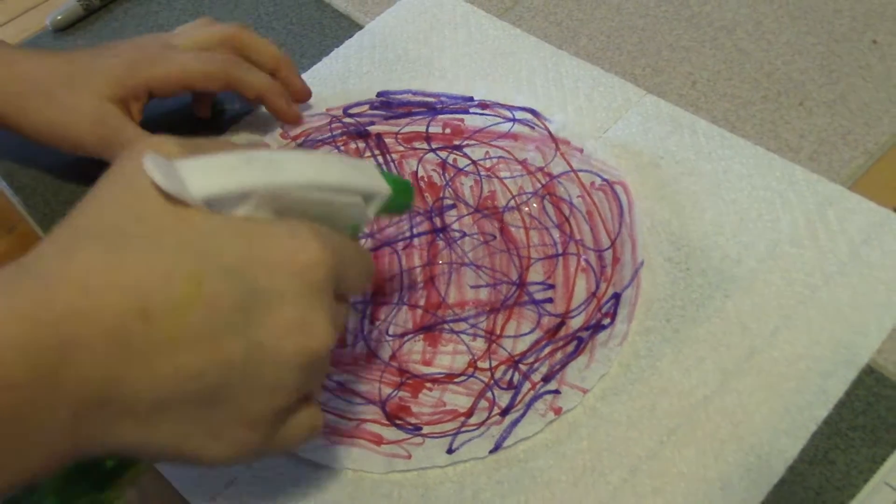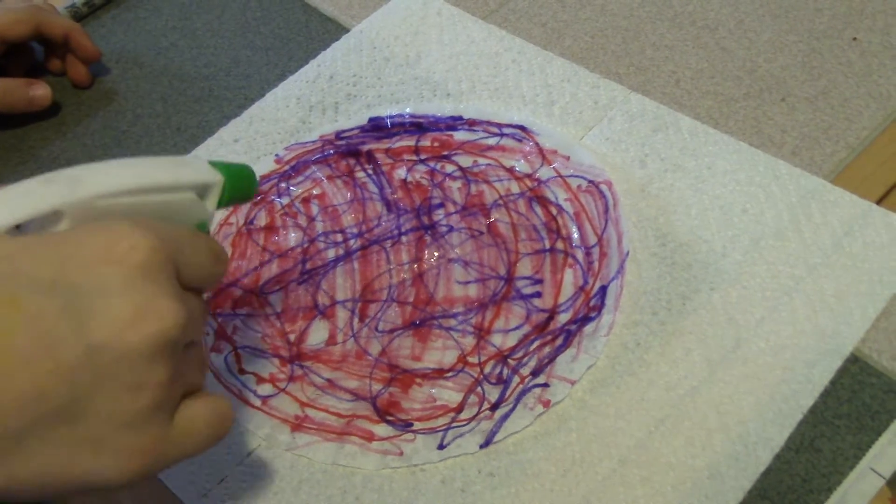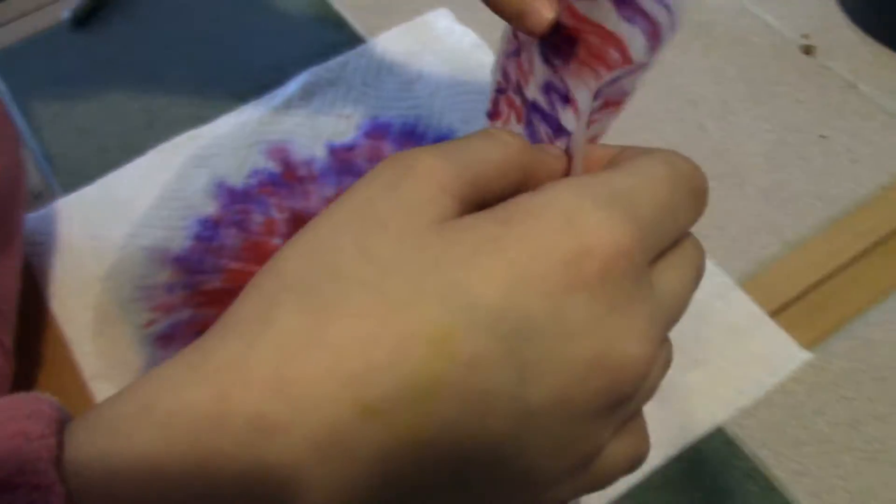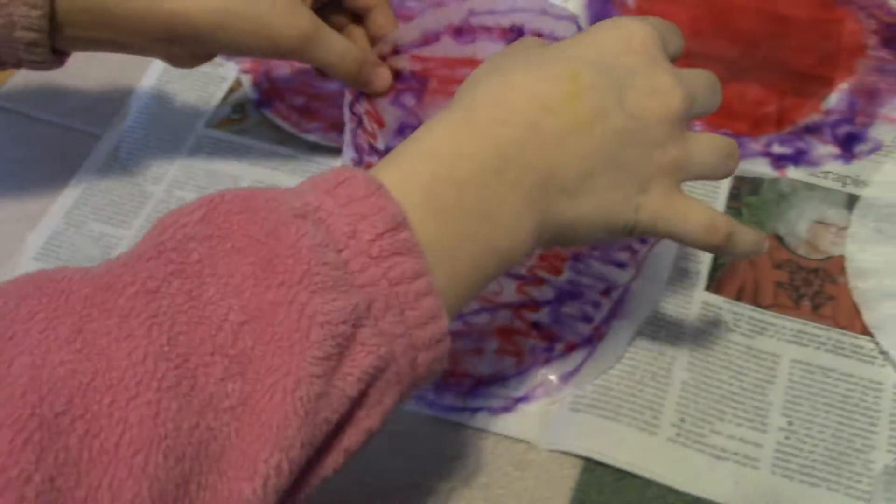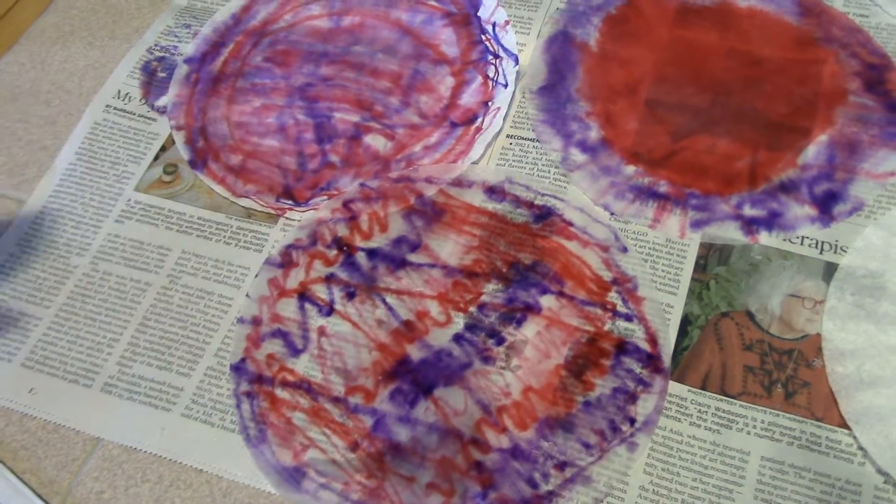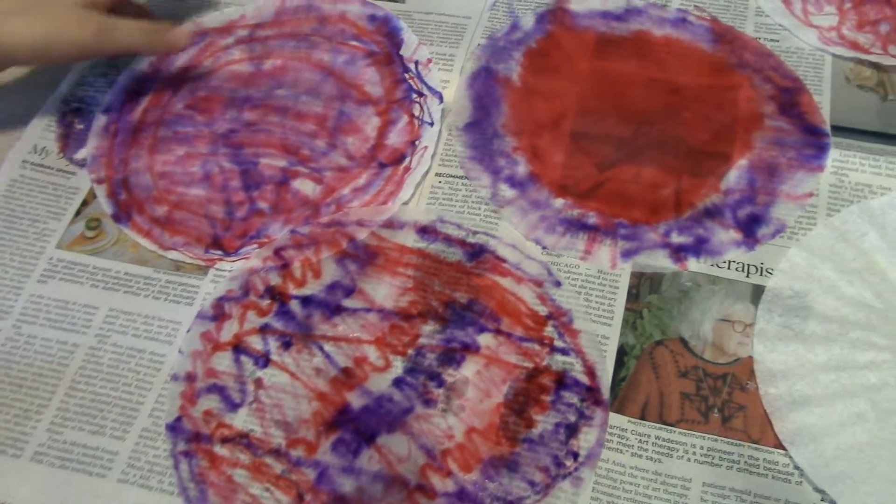You just color on the coffee filter however you want, spritz it with the water, and set it aside to dry. The markers will become like a watercolor effect as the water dries.